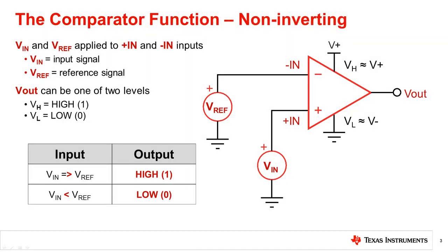Let's begin with the basic overview of how a comparator works. A comparator gets its name because it compares the voltages applied to its inputs and sets its output voltage based on the input levels. If the input signal is greater than the reference voltage, the output will be high, or a logic 1, which approaches the positive power supply voltage. If the input signal is less than the reference voltage, the output will be low, or a logic 0, which approaches the negative power supply voltage.